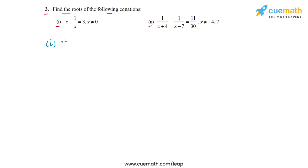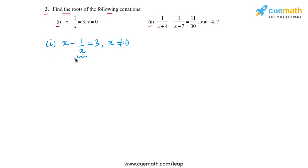In the first part, the equation is x minus 1/x equal to 3, and we're also told that x is not equal to 0, because if x is equal to 0 then the term 1/x will be undefined. So let's modify this equation and write it in standard quadratic form.